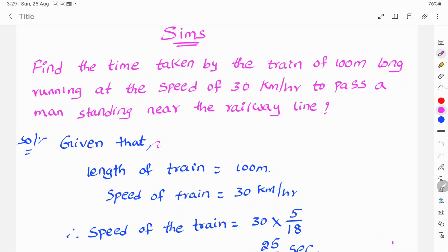So let's see the solution. Given that, length of the train is 100 meters and speed of the train is 30 kilometers per hour.